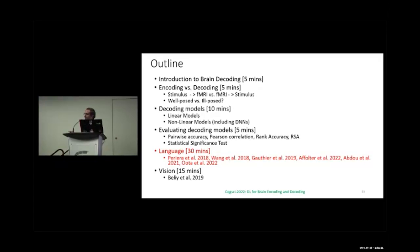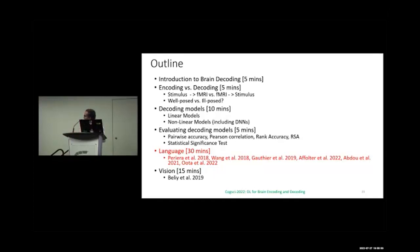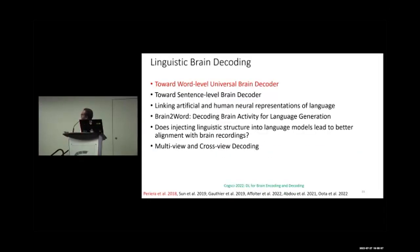Now focusing on language-related brain decoding papers: the popular works include Pereira's word-level work, then sentence-level and transformer-based models, Wang et al. (sentence level), Gautier, Affolter, and my own work. We are going to focus first on 'Toward Word-Level Linguistic Brain Decoding / Universal Brain Decoder.'